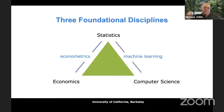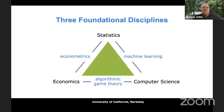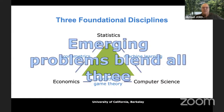Econometrics didn't have much mechanism design or computational algorithms. Machine learning didn't have much economics. Algorithmic game theory didn't have much data analysis and statistics. The real emerging problems are a blend of all three, and we don't have that blend in place. We're going to need new ideas — this is not just taking old ideas and putting them together.